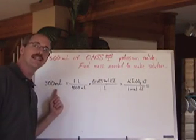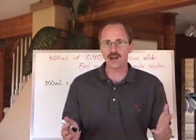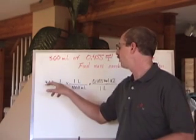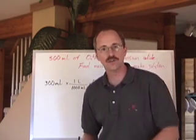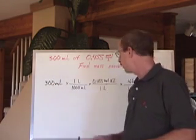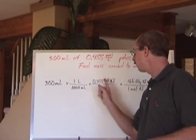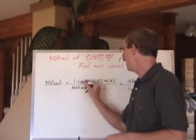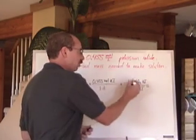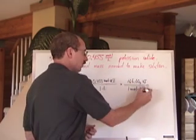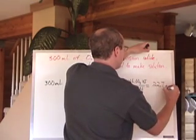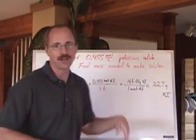If you have 300 milliliters of that solution, you can't use milliliters directly in the calculation, so convert to liters. Some of you will just write 0.300 liters — that's fine, but don't lose your significant digits; you still need three. Milliliters cancel, leaving liters. Then multiply by the concentration in moles per liter — liters cancel, giving you moles of KI. You don't want moles; you want mass. So multiply by the molar mass of potassium iodide, which is grams per mole — moles cancel, leaving grams of KI. When you punch that into your calculator, you get 22.7 grams of KI.